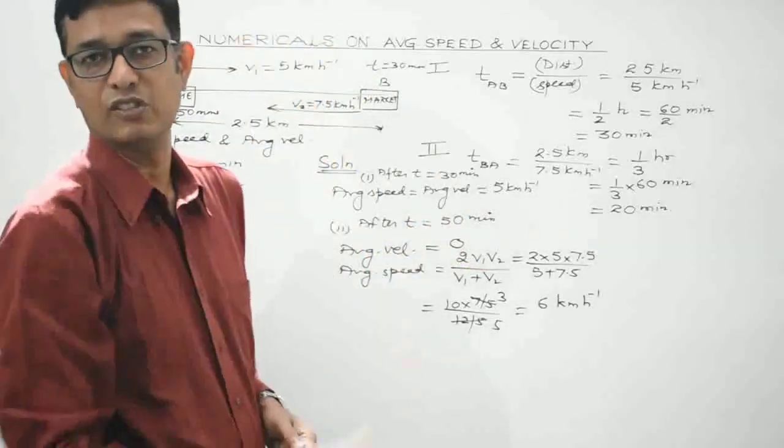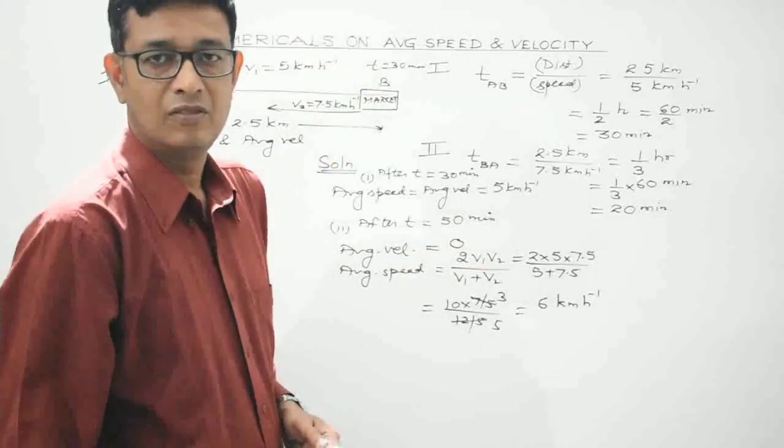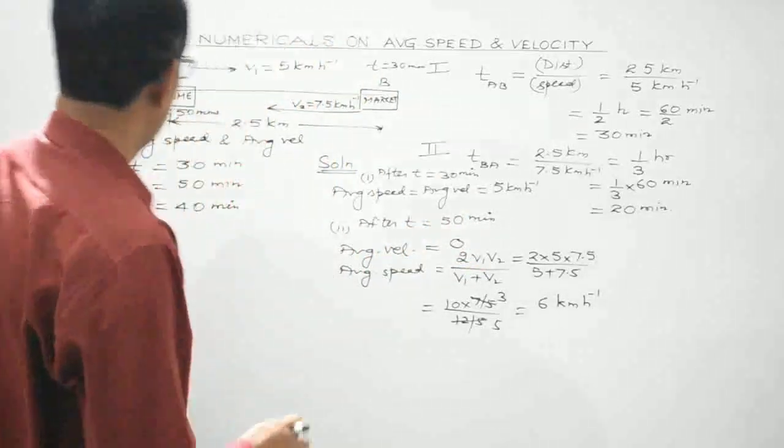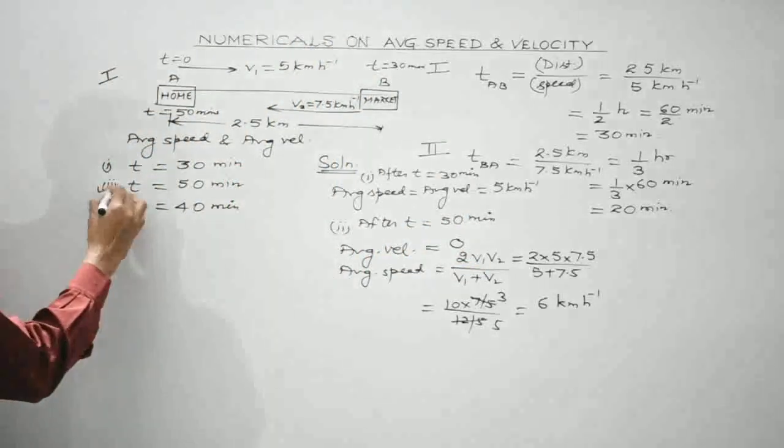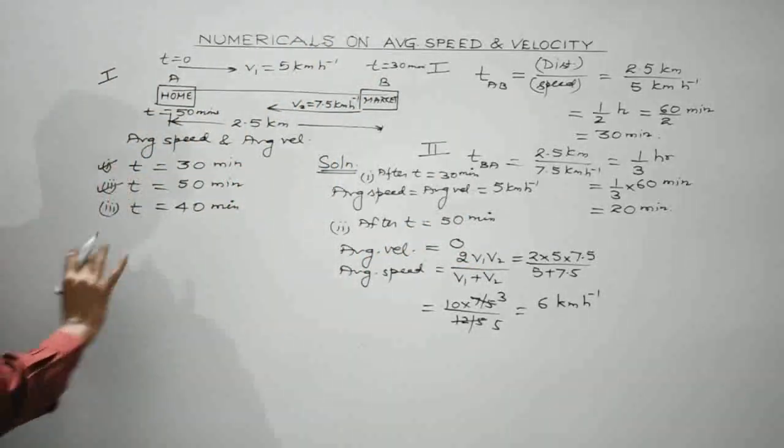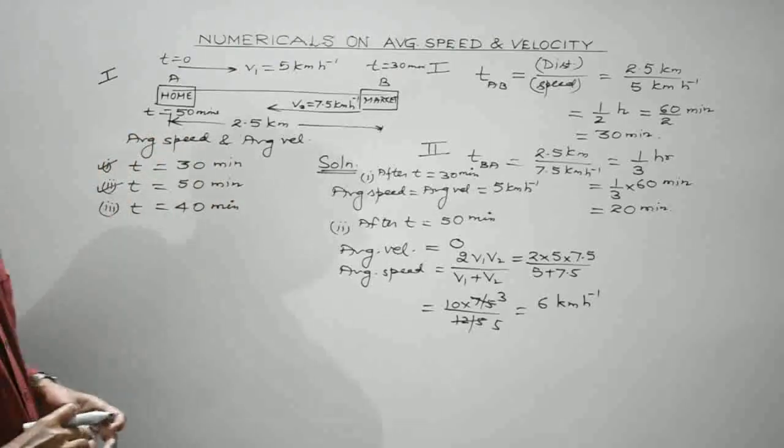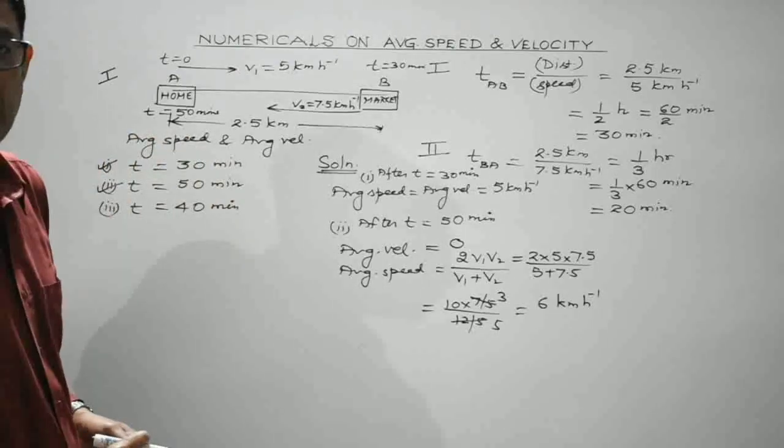So for the time interval of 50 minutes: average speed = 6 km per hour and average velocity = 0.